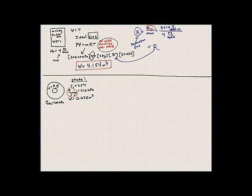In state two, the temperature rises to 50 degrees Celsius. We're going to assume the tire doesn't change shape — it has a rigid shape — so the volume at state two is the same as the volume at state one. What we're interested in is finding the gauge pressure inside the tire at state two.